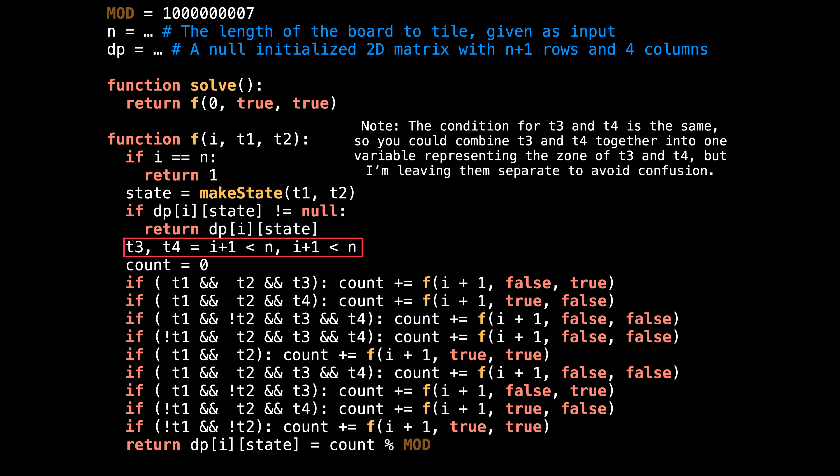But first, we need to know what the rest of the frontier looks like. Since the frontier always moves when we place a new block, t3 and t4 are always available. This is except for when they are outside the grid. You may notice that the condition for t3 and t4 is the same. So we could in theory combine t3 and t4 together into one variable representing the zone for t3 and t4, but I'm leaving them separate to avoid that confusion.